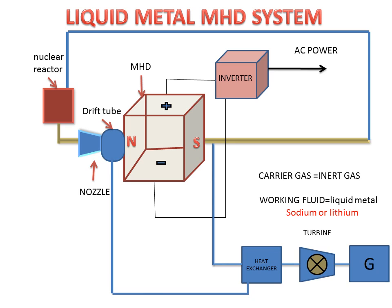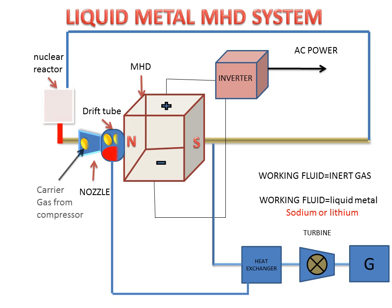Now we see the liquid metal MHD system working. The nuclear reactor will give metal vapors which will be combined with the carrier gas, and in the drift tube they will mix together. The carrier gas and metal vapor will be supplied further to the MHD system, which will create DC power supply, and the inverter is used for converting this DC power supply to AC power.